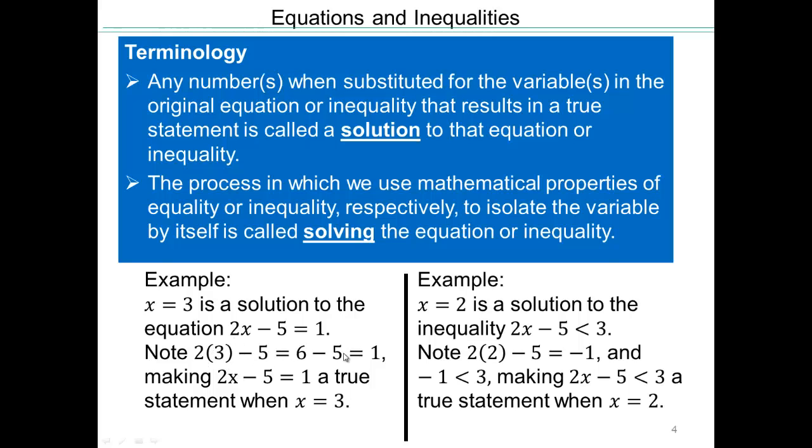2 times 3 is 6. 6 minus 5 is 1. And 1 is equaling 1. So x equals 3 makes this statement a true statement, which means that x equals 3 is a solution to this equation.